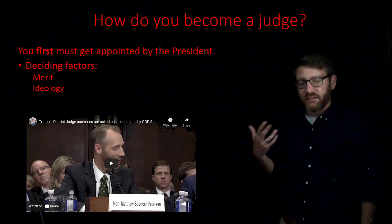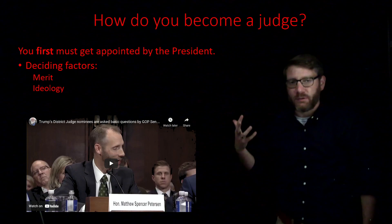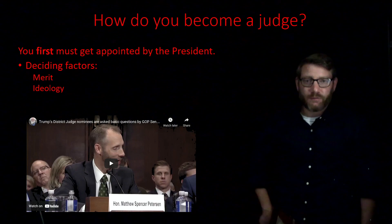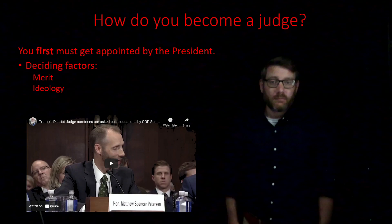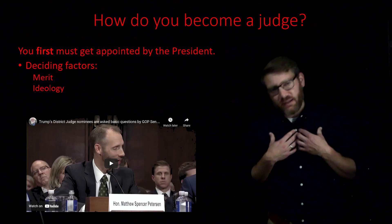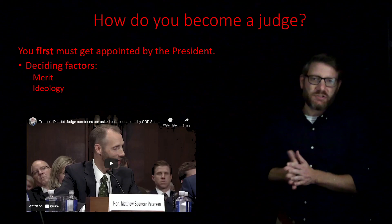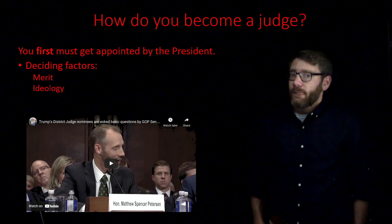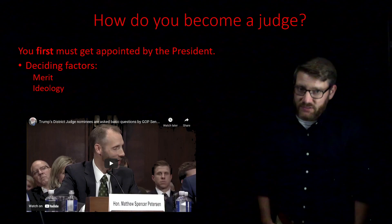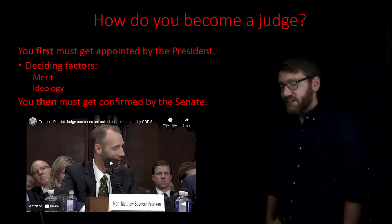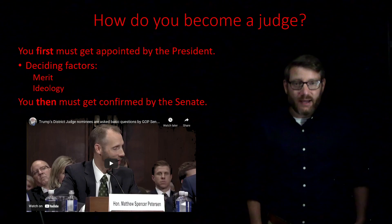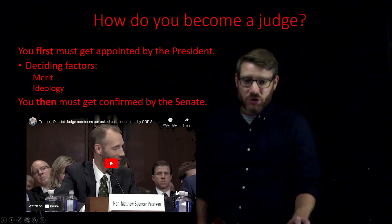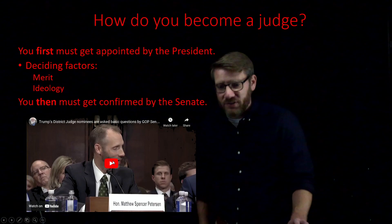The president will usually use deciding factors such as merit — meaning they've shown they would be a really good judge — but also ideology. Conservative presidents will pick conservative judges; liberal or progressive presidents will pick liberal or progressive judges. If I'm the president, I want to pick judges that reflect my vision for America. Now, one of the things we learned in chapter 10 is that for the most important appointments the president can't just appoint whoever he wants — the Senate has to confirm them.